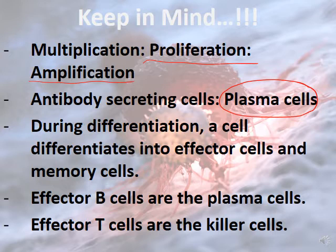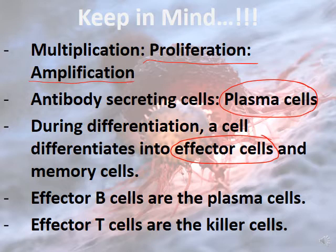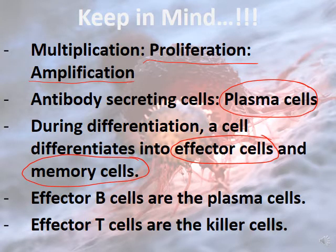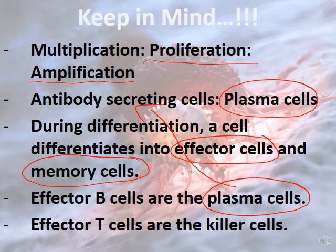During differentiation, a cell will differentiate either into an effector cell — able to secrete antibodies in the case of B lymphocytes, or able to kill other cells in the case of T lymphocytes — or into memory cells, which are kept for use the second time. Effector B cells are called plasma cells, while effector T cells are called killer cells.